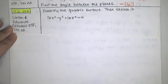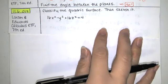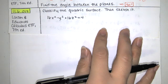In this video, we solve problem 11.6.017 from the Larson and Edwards Calculus Early Transcendental Functions text, 7th edition. We're asked to classify the quadric surface and then sketch it.